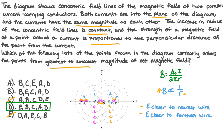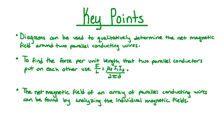Let's summarize our lesson. Key points: Diagrams can be used to qualitatively determine the net magnetic field around two parallel conducting wires. To find the force per unit length that two parallel conductors put on each other, use F over L equals mu-naught I1 I2 divided by 2πD. The net magnetic field of an array of parallel conducting wires can be found by analyzing the individual magnetic fields.